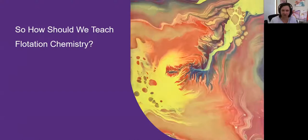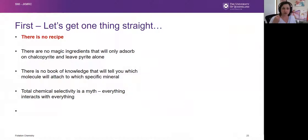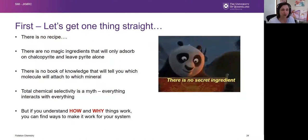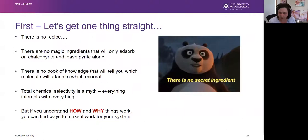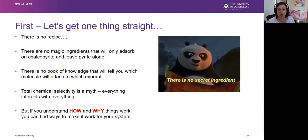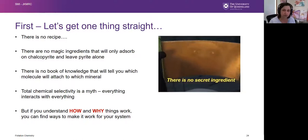So if the way flotation chemistry is taught is not the best, how should we be doing it? The first step towards good teaching of flotation chemistry is to understand that there is no recipe. There is no magic ingredient that will only adsorb onto one mineral and not another. There is no secret book of knowledge you can look up for the appropriate chemistry under any circumstances. Chemical selectivity — complete and total chemical selectivity — is a bit of a myth because everything interacts with everything. There are no absolutes when it comes to flotation chemistry. But if you understand how and why things work, you can find ways to make it work in your system in a way that is much more agile and adaptable when things in your plant start to change, as they always do.